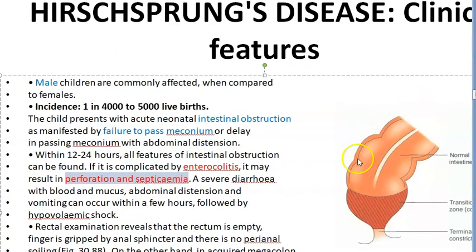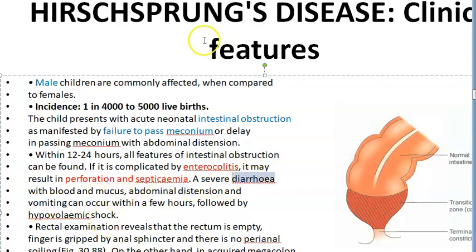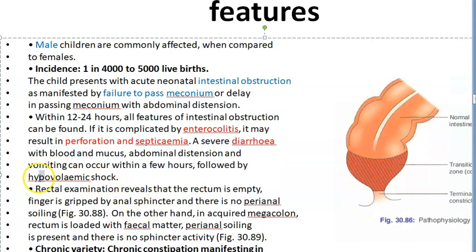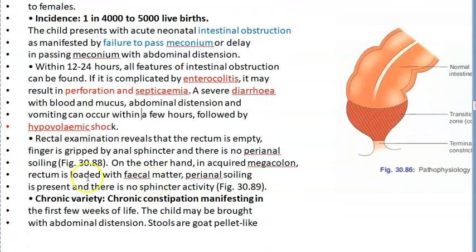Enterocolitis can result in intestinal perforation and septicemia, which is progressively serious — contents from the intestine can enter the abdomen. Severe diarrhea with blood and mucus can also occur. Vomiting and abdominal distension are additional features.